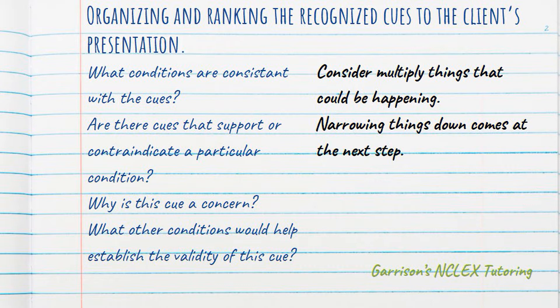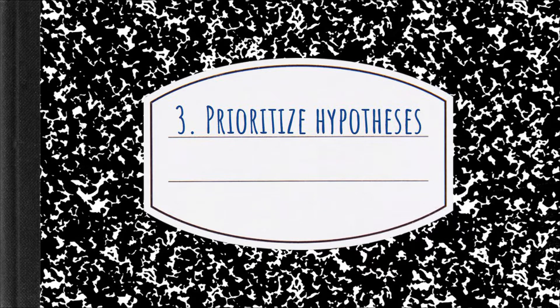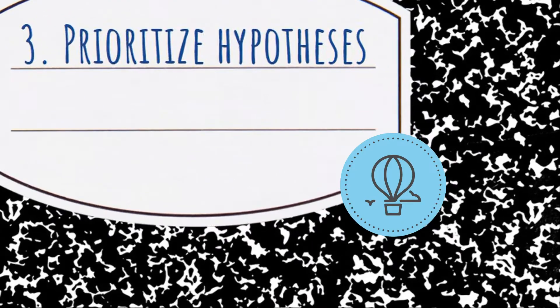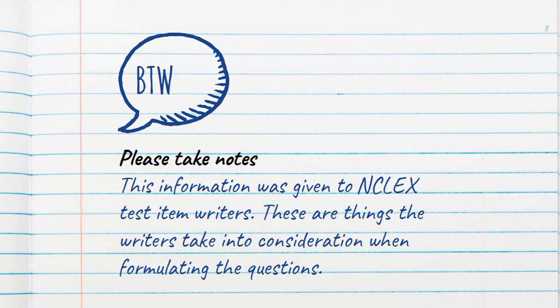So we talked about recognizing cues and analyzing cues. Now let's talk about the next step. Now that we've looked at the question, recognized the cues, and analyzed the cues, we want to take these cues and form a hypothesis. You could come up with multiple hypotheses as to what the NCLEX question is asking, so you need to prioritize your hypotheses. By the way, I'd like to remind you all to please take notes — this information was given to NCLEX test writers, and these are things the writers take into consideration when formulating a question.